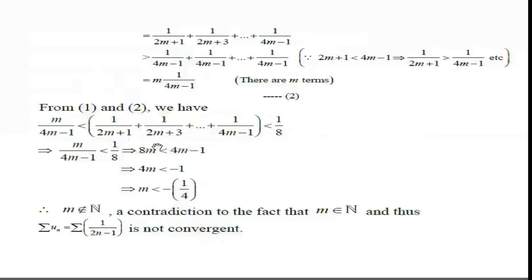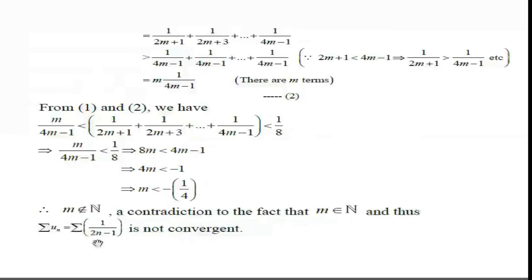Transposing: 8m − 4m < −1, that is 4m < −1, which implies m < −1/4. So m must be less than −1/4, meaning m takes only negative values and cannot be a natural number. But m is always a natural number. Therefore this is a contradiction, and thus the given series 1/(2n−1) is not convergent.